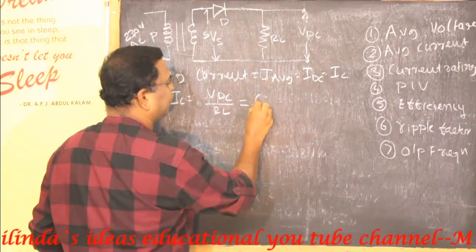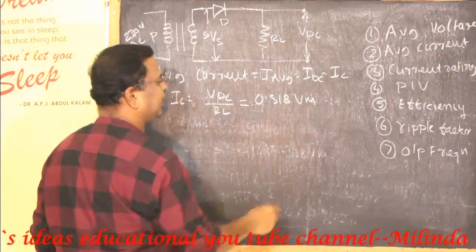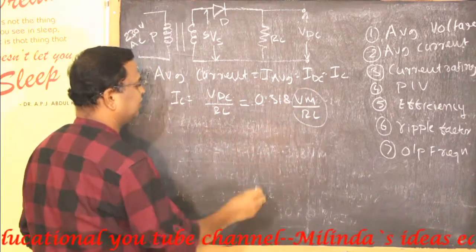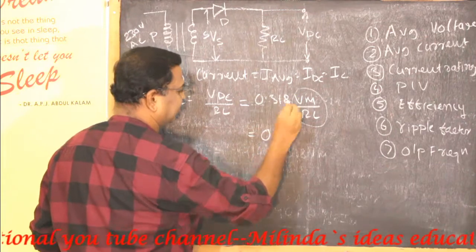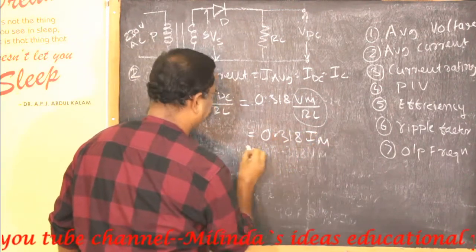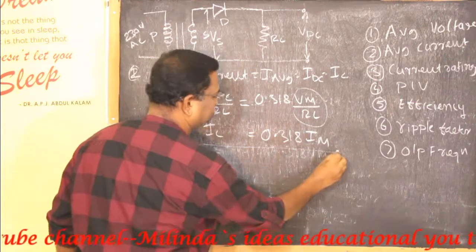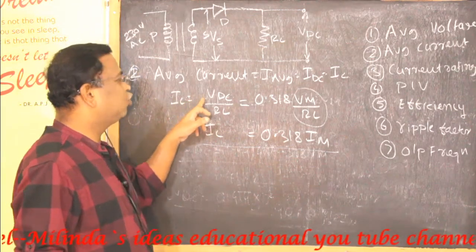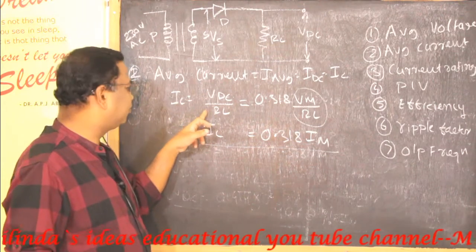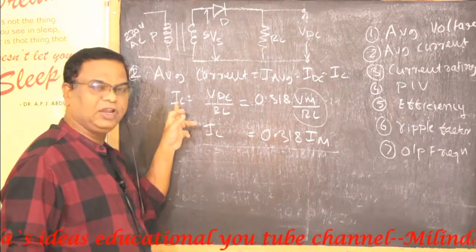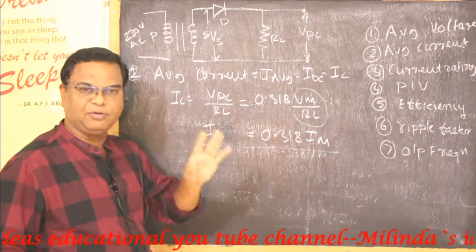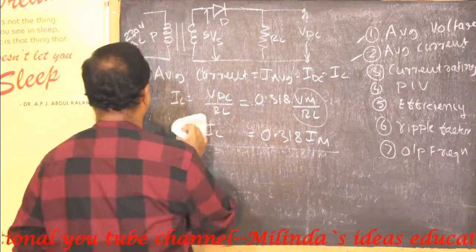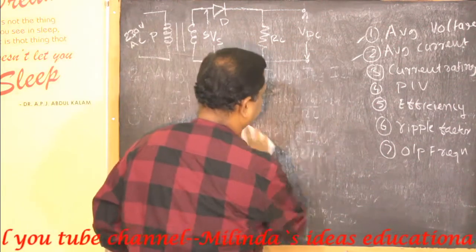Since Vdc equals 0.318 Vm, the load current I L equals Vdc divided by RL, which gives us 0.318 Im. So I L equals 0.318 Im. By knowing the output voltage and the load resistance value, we can easily calculate the load current or average current or DC current using Ohm's law. That is our second parameter.